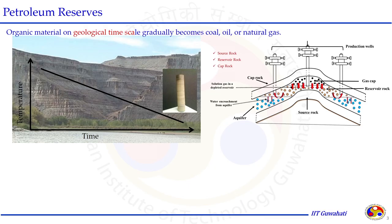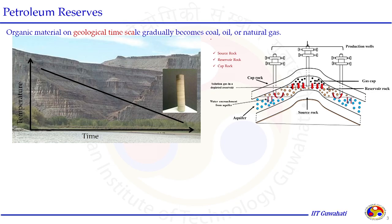The petroleum reserves are the deposition of organic and rock material underneath the surface. The picture shown in the last lecture is a surface picture where the deposition of similar kinds of strata is shown, where the time-temperature history underneath the surface converts the organic material to hydrocarbon fluid. This happens over the geological time scale, where the organic material converts into coal, oil and natural gas.